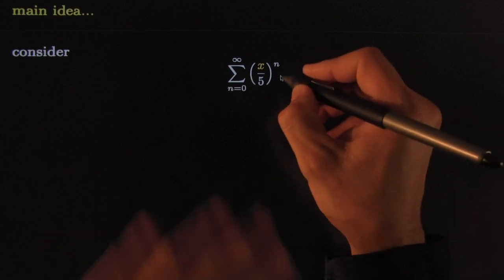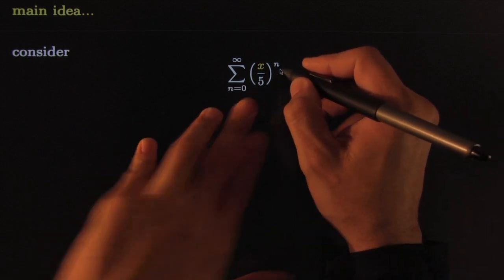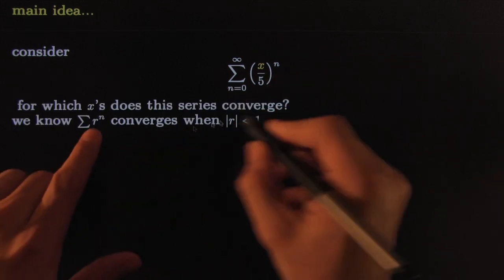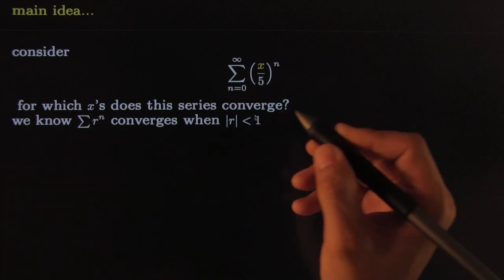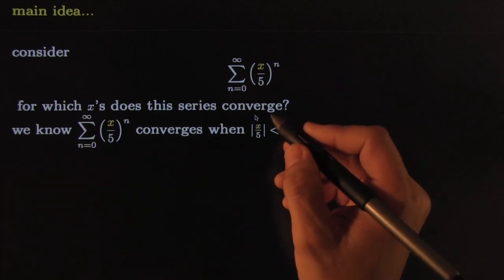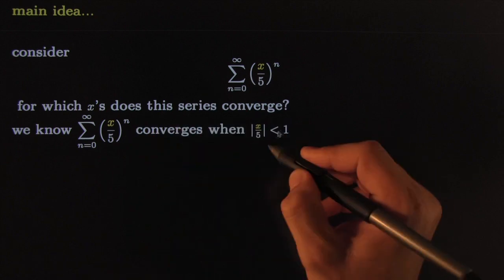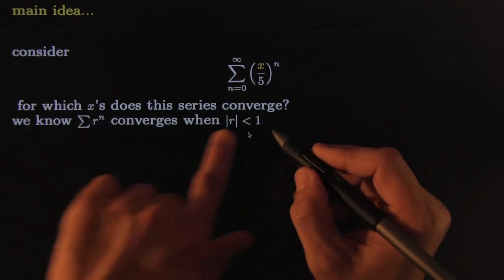Anyways, this one's not so bad—we can figure it out. We said before this will converge if r is less than one. So our thing that we're taking the power is x over five. Therefore, it'll converge when x over five is less than one. Here, this is a general rule.